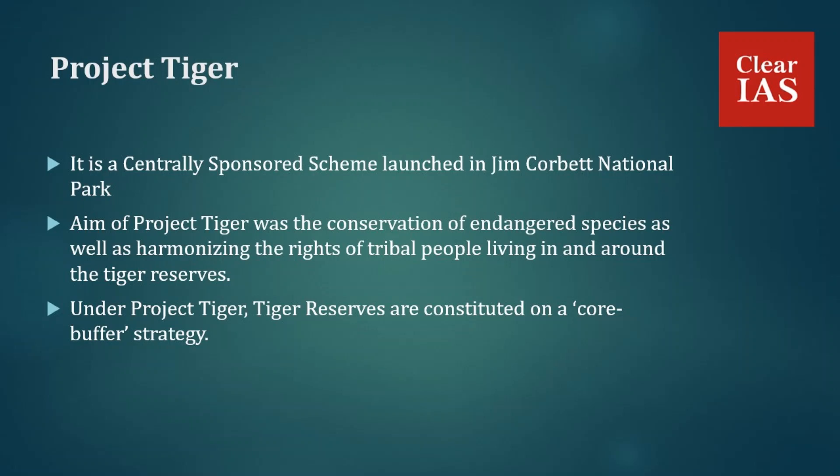Project Tiger is a centrally sponsored scheme launched in Jim Corbett National Park, which is in Uttarakhand, in 1973. The objectives of initiating Project Tiger were to ensure maintenance of available tiger populations in India for scientific, economic, aesthetic, cultural, and ecological value, and to preserve areas of biological importance as national heritage for the benefit, education, and enjoyment of people. It also aimed at conservation of endangered species and harmonizing the rights of tribal people living in and around tiger reserves.